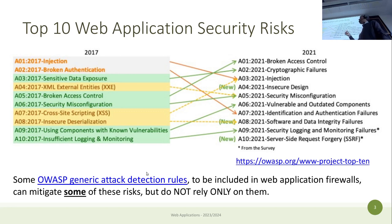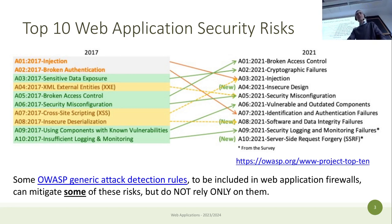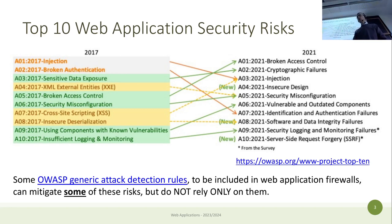On the OWASP website you will find the top 10 web application security risks — the top 10 problems in terms of security that can happen in web applications. It's interesting to see how things evolve over time: comparing 2017 and 2021, access control — which was not properly configured or implemented — has become the number one risk in 2021, whereas it was less prominent in 2017.